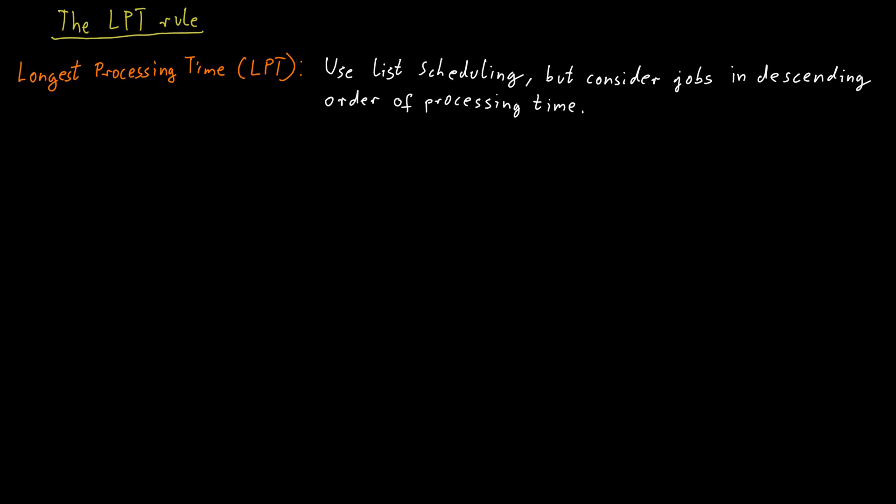We can reuse many of our previous arguments to show that this LPT algorithm gives a 1.5 approximation. The only thing we really need is a refinement of the lower bound for the optimum makespan. Remember that we said that the optimum makespan has to be at least as large as the processing time of any of the jobs. But we can say a bit more.